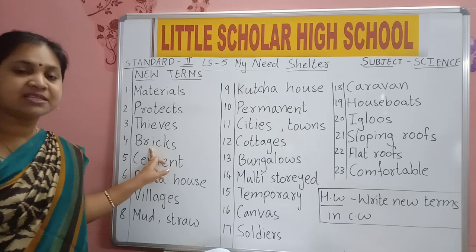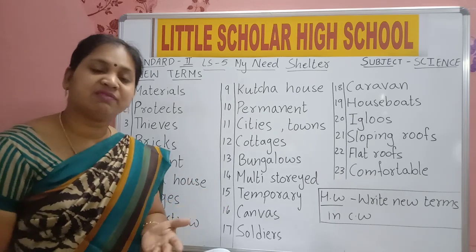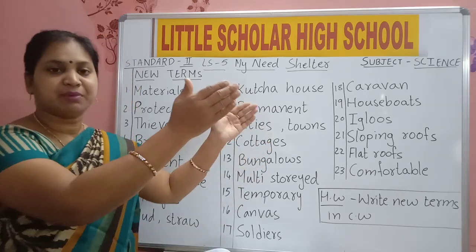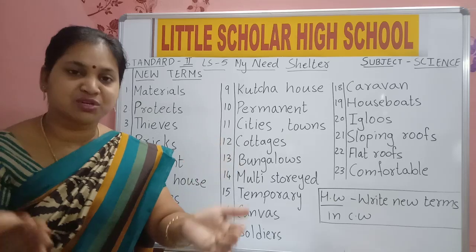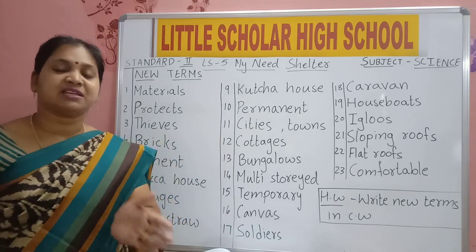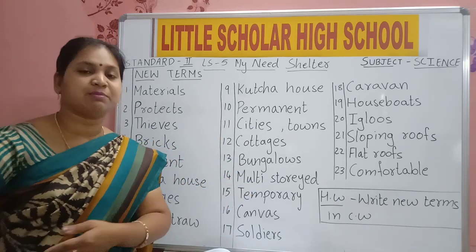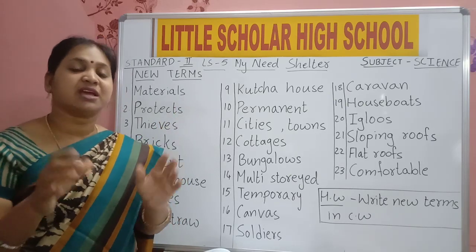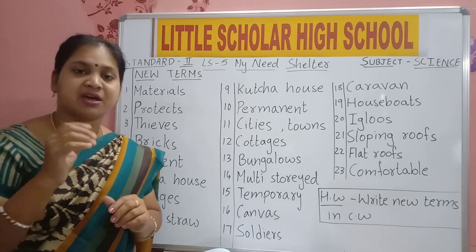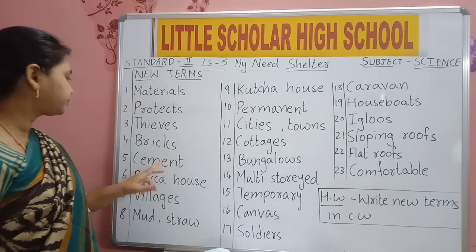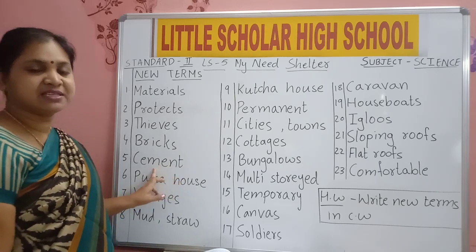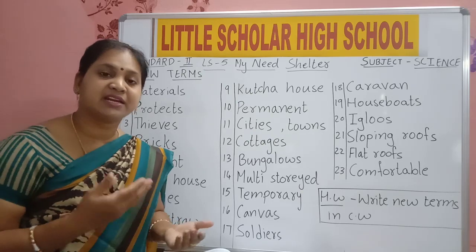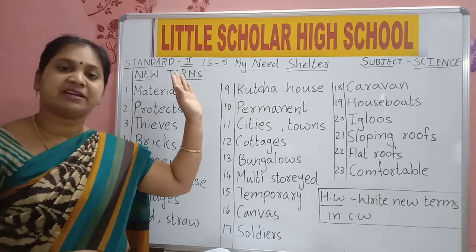Next term: Bricks — B-R-I-C-K-S. Bricks are the things we use to make a house. Where construction is going on, you can see bricks kept in one place, cement bags in another, sand and rods in another. Bricks will be in rectangular shape — very strong and hard. Next term: Cement — C-E-M-E-N-T. Cement is like a powder. They mix water in it and it is used for plastering and constructing the house.